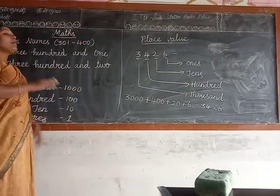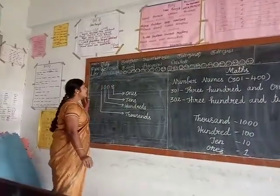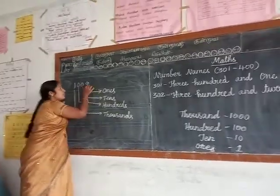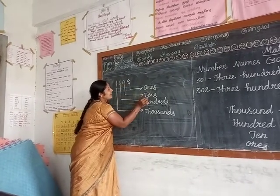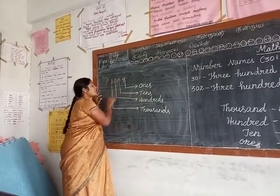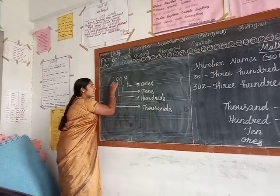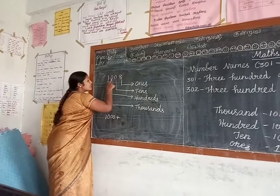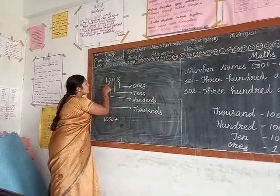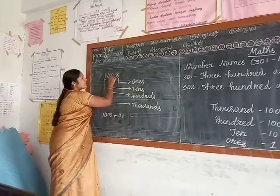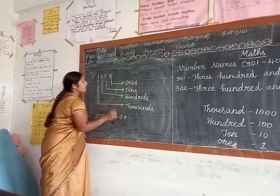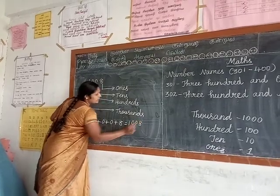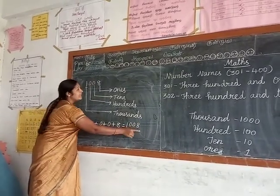Children, do you understand? Now I give one more example. Many children get confused in this part. If there is a 0, there is no value. See — what is the 1s place? Next is the 10s place, then 100s, and the last place is 1000s. In the 1000s place, what is the number? 1 — so how many zeros do we add? Three zeros. Plus — in the 100s place, what number is there? 0. In the 10s place? 0. In the 1s place? 8. So we write 1000 + 8. How do you spell this number? One thousand and eight.